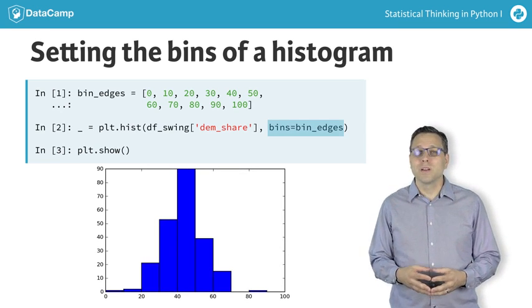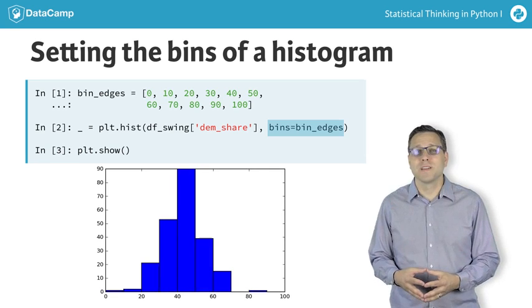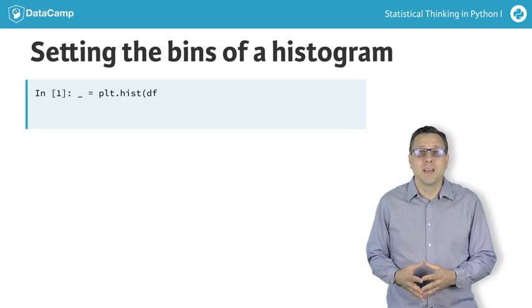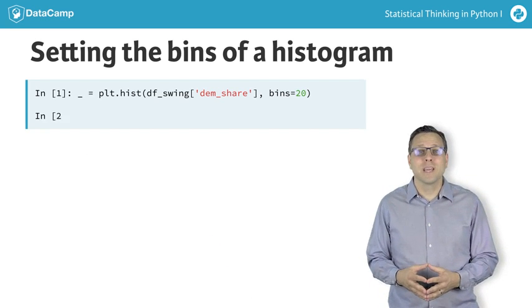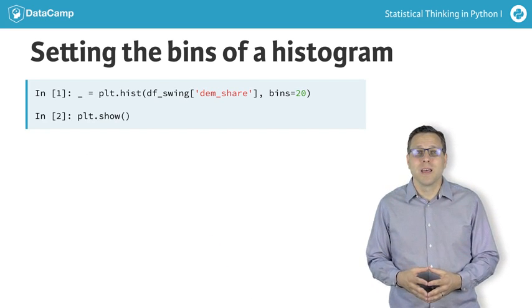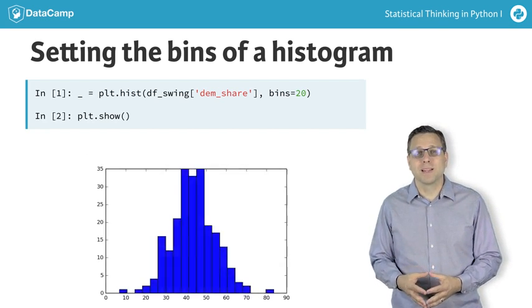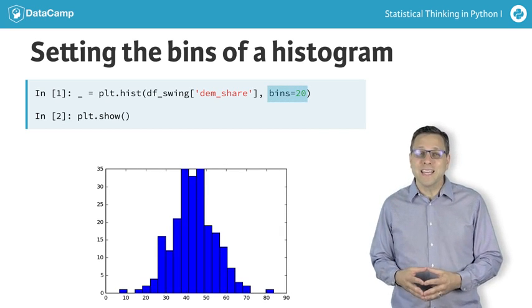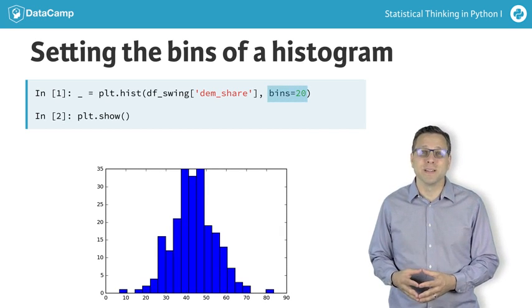You can also specify the number of bins, say 20, using the bins keyword argument, and Matplotlib will automatically generate 20 evenly spaced bins.